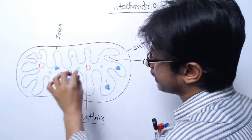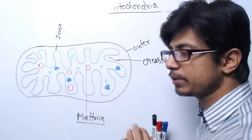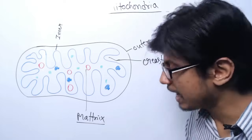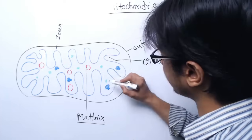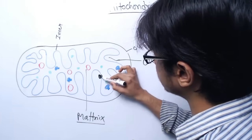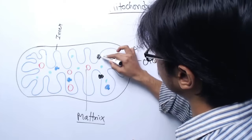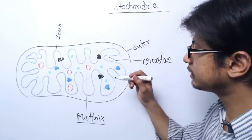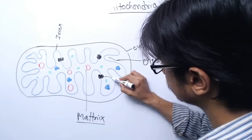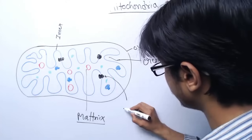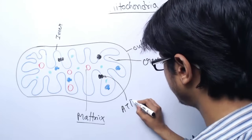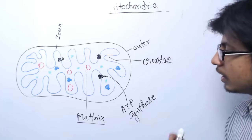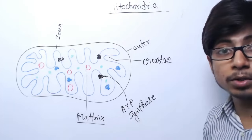If you look at the inner membrane and the cristae, we have the most efficient and important enzyme that makes ATP, and that is known as ATP synthase. ATP synthase is like a rotor found in the cristae — in the layer of the cristae in this membrane — and it is responsible for making ATP.